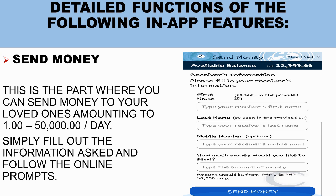The mobile number is optional — if you don't know the recipient's number, you can leave it or put your own. Then hit the Send Money button. When you click Send Money, you'll see an option to review the details you entered to make sure everything is correct. Once confirmed, press OK, then enter your 4-digit or 5-digit PIN to complete the transaction. You'll then see the control number, the amount sent, and the recipient's name.